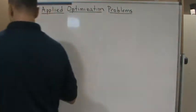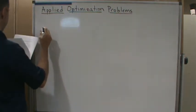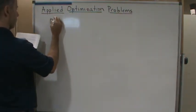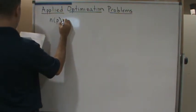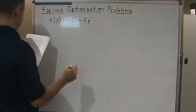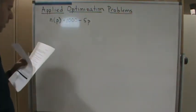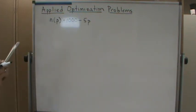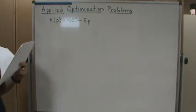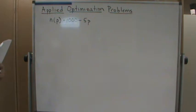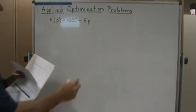The linear function n of p equals 1000 minus 5p. If they charge fifty dollars per day or less, they will rent all their cars. If they charge two hundred dollars per day or more, then they will not rent any cars.